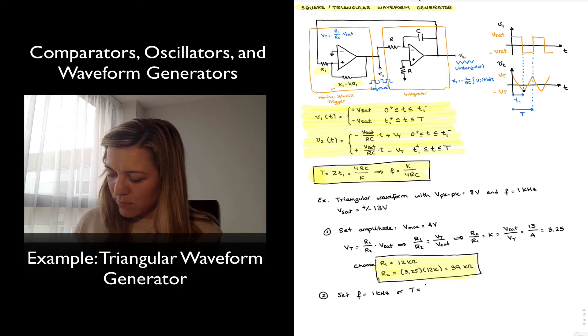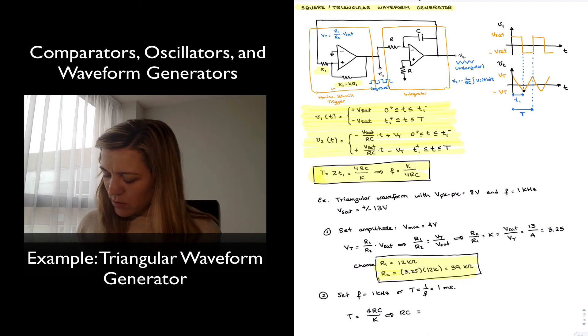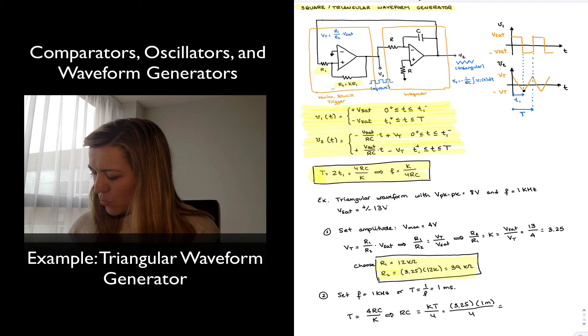So set frequency to 1 kilohertz, which is equivalent to setting the period to 1 millisecond. So I can use either one of those equations, the period or the frequency. I'm going to go ahead and choose my period. So I'm going to have T equals 4RC divided by K, which means my RC is going to be equal to K times T divided by 4, or 3.25 times 1 milli divided by 4. And that comes out to be 0.813 times 10 to the negative 3.